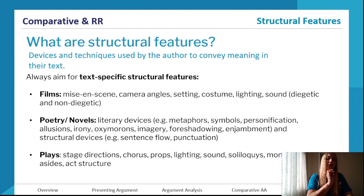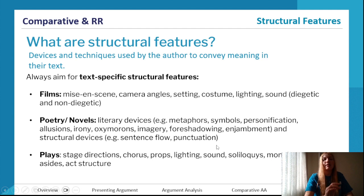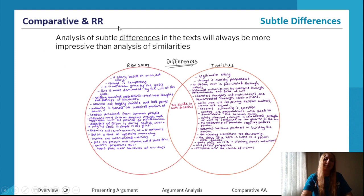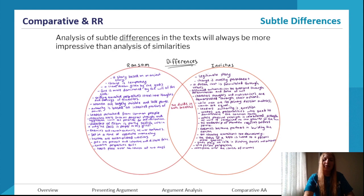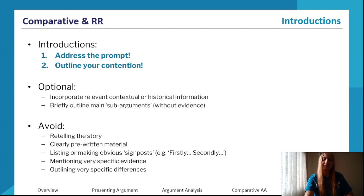That idea of making links based on structural devices is very important and applies to most texts in English. Always aim for text-specific structural features — for example, if studying a film, use film techniques as evidence, aiming for a 50/50 balance of quotes versus film techniques. Similarities are still needed but are not as valuable, so limit how many you have. Refer back to subtle differences as much as possible — the more difficult a difference is to spot, the more valuable it is.